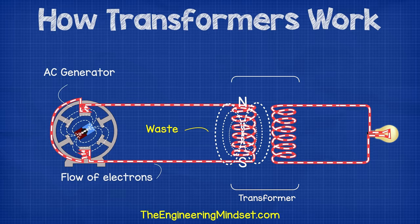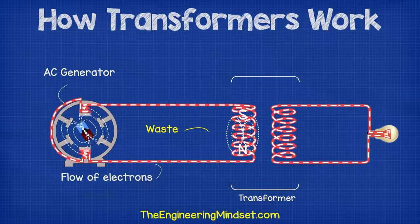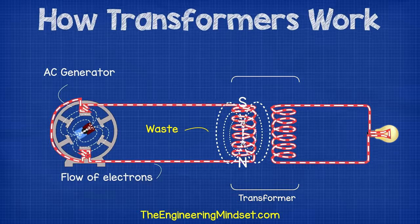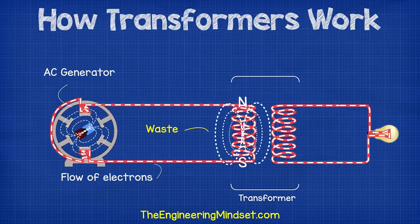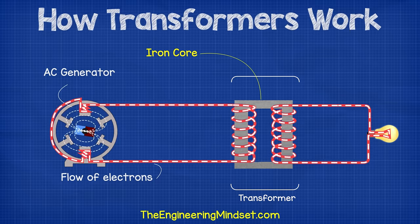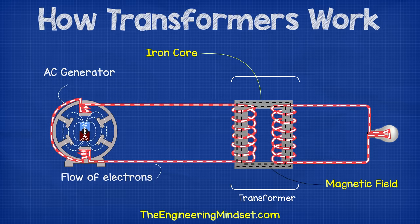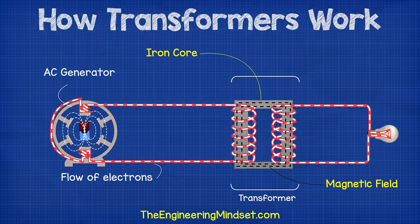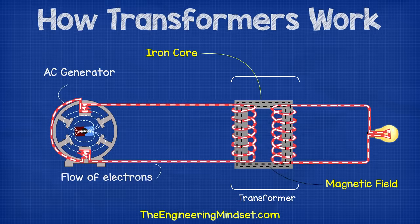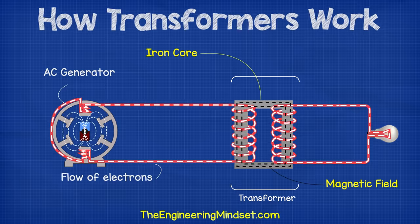Now the problem with this setup is that a lot of the magnetic field from the primary side is being wasted because it's not in range of the secondary coil. So to fix this, engineers place a core of ferromagnetic material, such as iron, in a loop between the primary and secondary coils. This loop guides the magnetic field along a path to the secondary coil so that they will share the magnetic field, and this makes the transformer much more efficient.